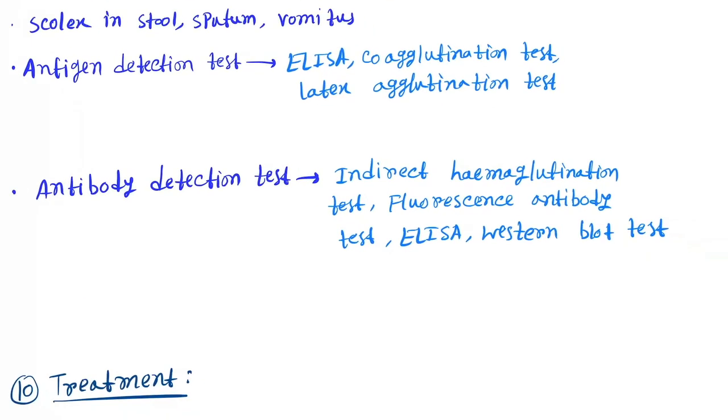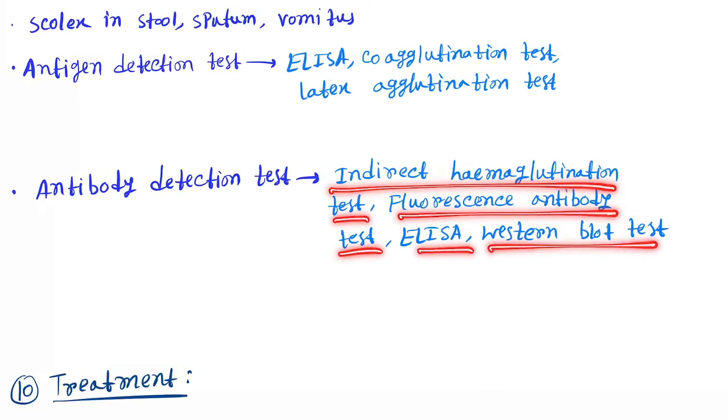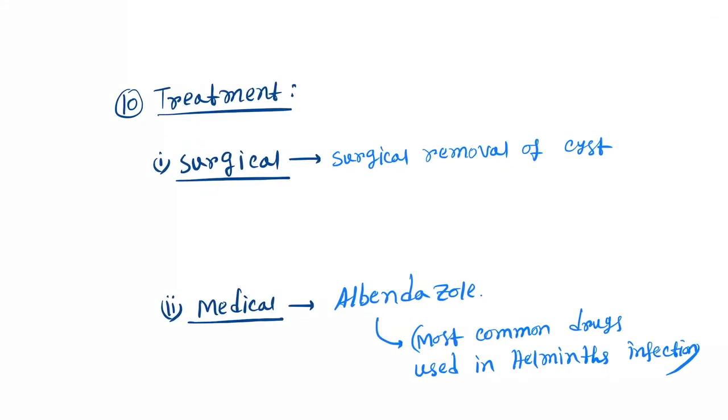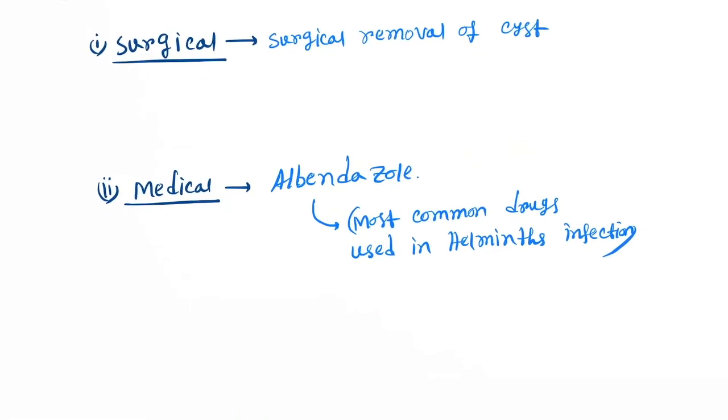Last is the treatment. You can do the treatment by two procedures: first one is surgical and second is medical. Surgical is the surgical removal of the cyst, and medical is albendazole. Albendazole is the most common drug used in helminthic infection.